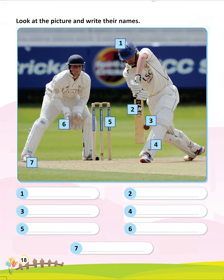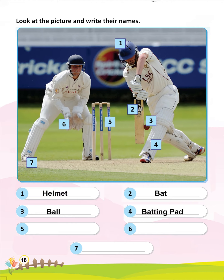Look at the picture and write their names. 1. Helmet. 2. Bat. 3. Ball. 4. Batting Pad. 5. Stumps. 6. Gloves. 7. Shoes.